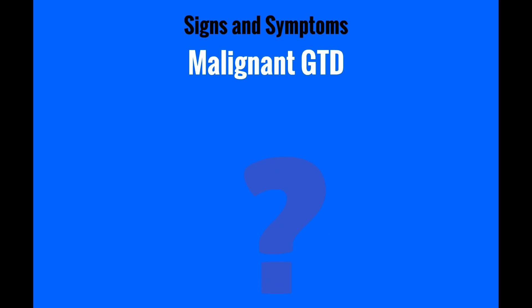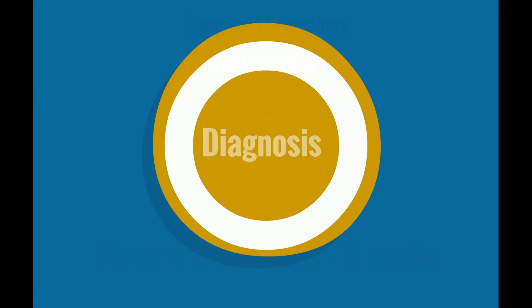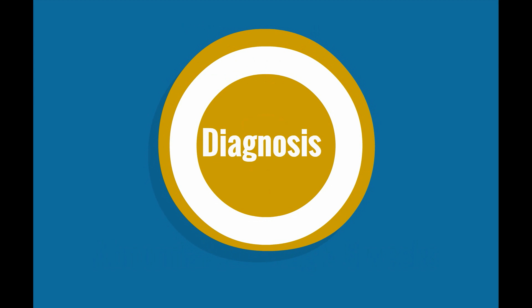Women with malignant GTD may have subtle signs and symptoms of disease, making the diagnosis more difficult. Abnormal bleeding for more than 6 weeks following any pregnancy, normal or abnormal, should be evaluated with beta-HCG testing to exclude a new pregnancy or GTD.